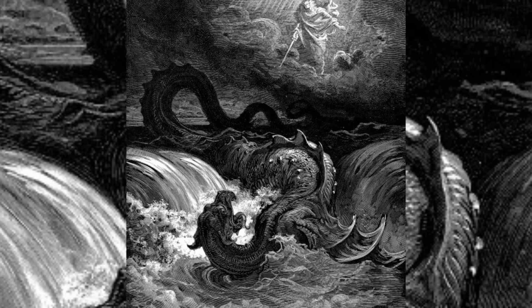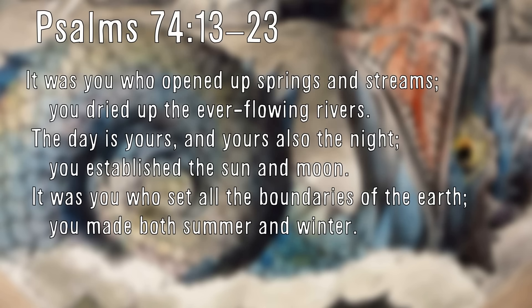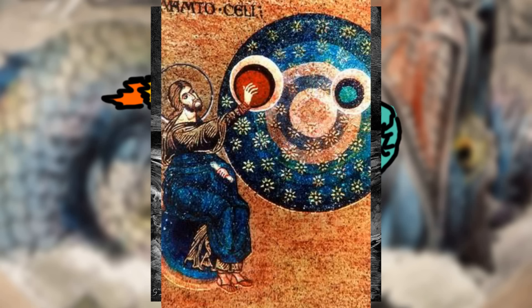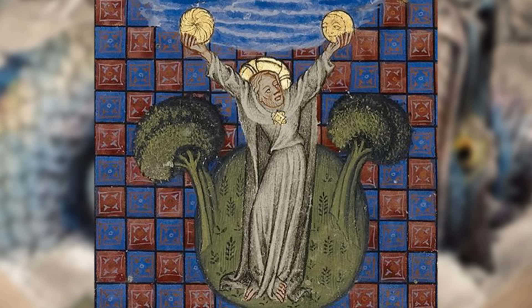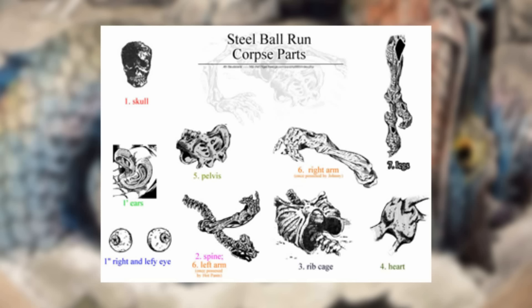Leviathan reappears later in Psalms within an apparent recollection of the creation of the earth: 'But God is my king from long ago. He brings salvation on the earth. It was you who split open the sea by your power. You broke the heads of the monster in the waters. It was you who crushed the heads of Leviathan and gave it as food to the creatures of the desert. It was you who opened up springs and streams. You dried up the ever-flowing rivers. The day is yours and yours also the night. You established the sun and the moon. It was you who set the boundaries of the earth. You made both summer and winter.' From this we can understand that Leviathan has multiple heads and was apparently murdered by God in a past battle, implied to be in the context of the creation of the world. Leviathan's corpse appears to have been dismembered and redistributed by God as food for creatures of the earth.